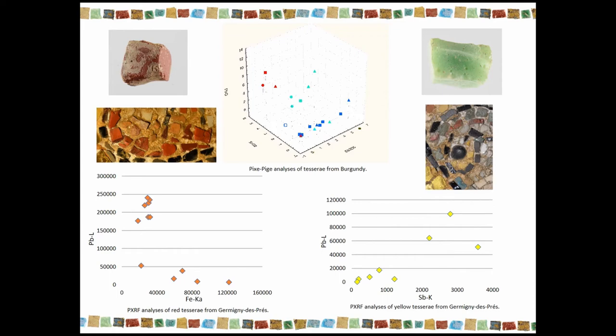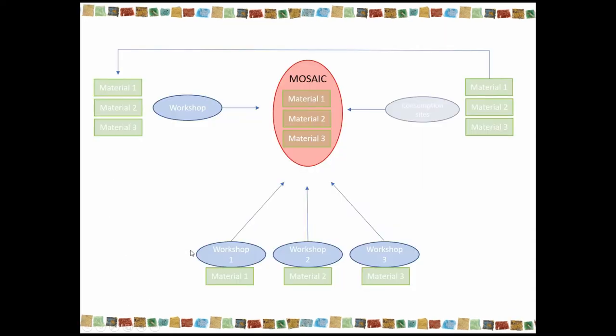And in our set of data, we could identify for the same color of tesserae, different recipes, in the same region, but also on the same site, for example, at Germigny-des-Prés. So, we've got several options. Of course, the mosaists could get their cubes from several workshops, supposing that these workshops were always working with the same material and with the same recipes.